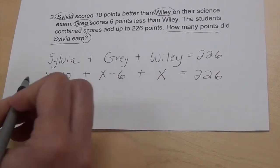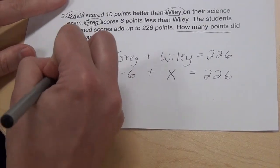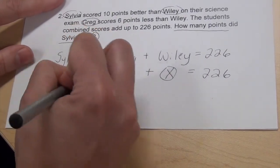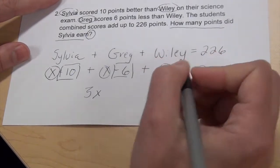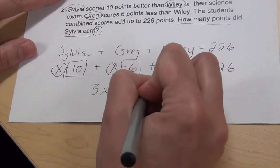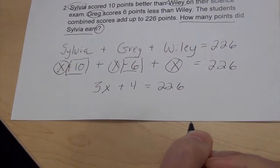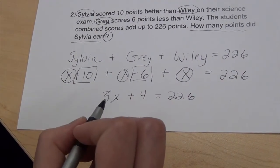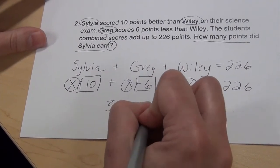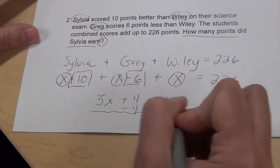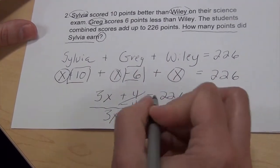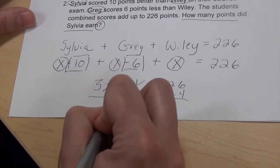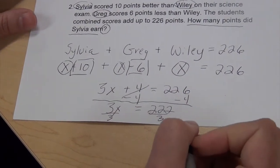Now that I've changed their names, I'm going to go ahead and combine like terms. I have three X's, so that's going to be 3X. And then I have my constant terms — I'm going to be really careful of that negative sign — so 10 minus 6 gives me positive 4. Now I recognize I have an algebraic equation: 3X plus 4 equals 226. I'm going to be really careful at the end to make sure that when I find X, that's really what I was looking for. So I'm going to subtract 4 from both sides. That cancels out, and I get 222. Then I'm going to undo the multiplication and divide by 3.